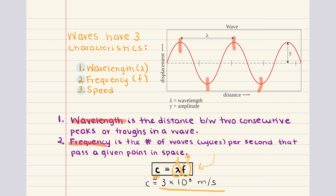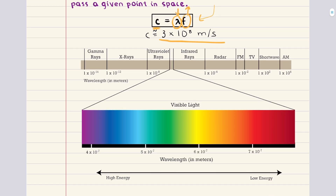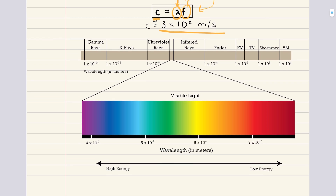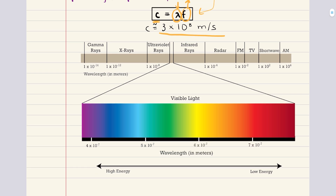The electromagnetic spectrum encompasses a vast range of wavelengths and frequencies, each corresponding to different types of radiation with unique characteristics. Starting from the longest wavelengths, we have radio waves, ranging from about 10⁶ meters down to 1 meter, widely used for communication such as radio and television broadcasts. Next, we encounter microwaves with wavelengths between 1 meter and 1 millimeter, commonly used in radar and for heating food in microwave ovens.